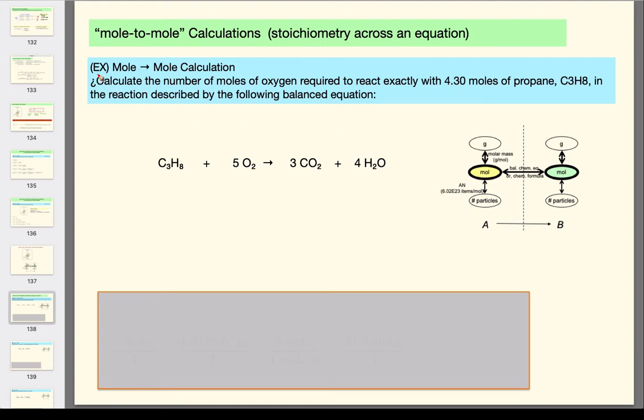So let's analyze the question. Calculate the number of moles. We now know what our box is of oxygen. We know which material we're interested in is reacting with this many moles, 4.3 moles of propane. So the two items we're interested in this chemical reaction is a relationship between oxygen and propane.